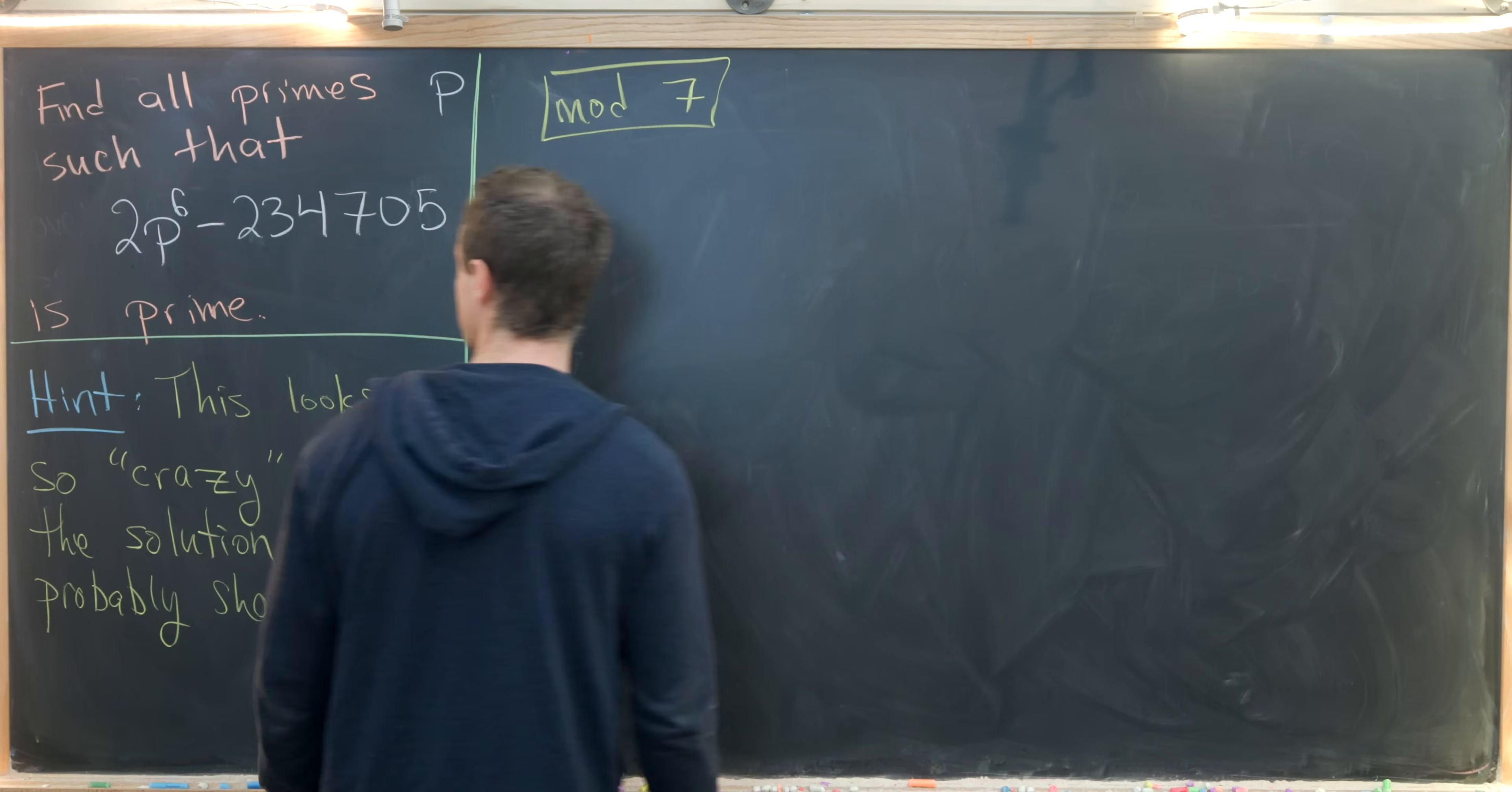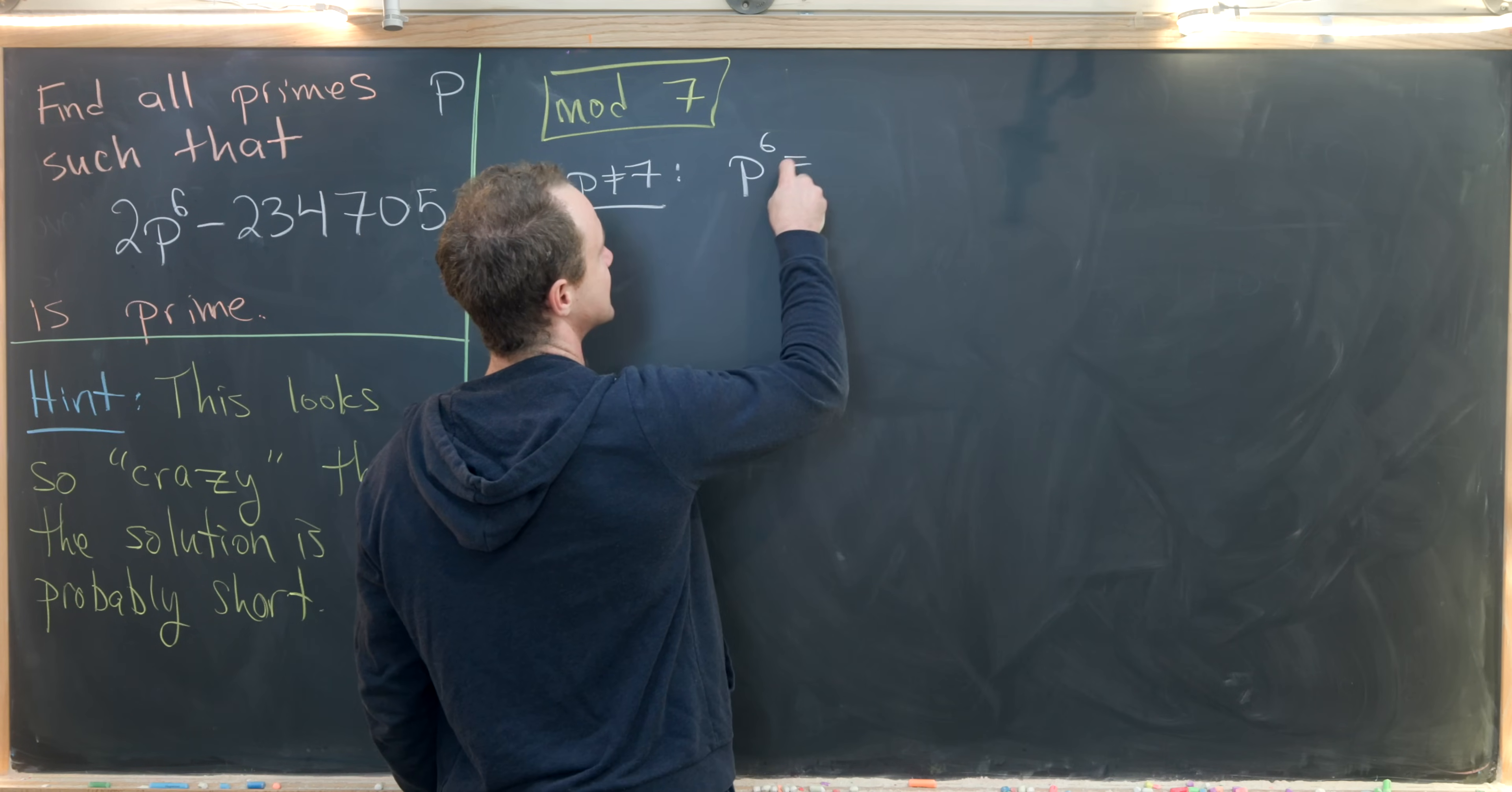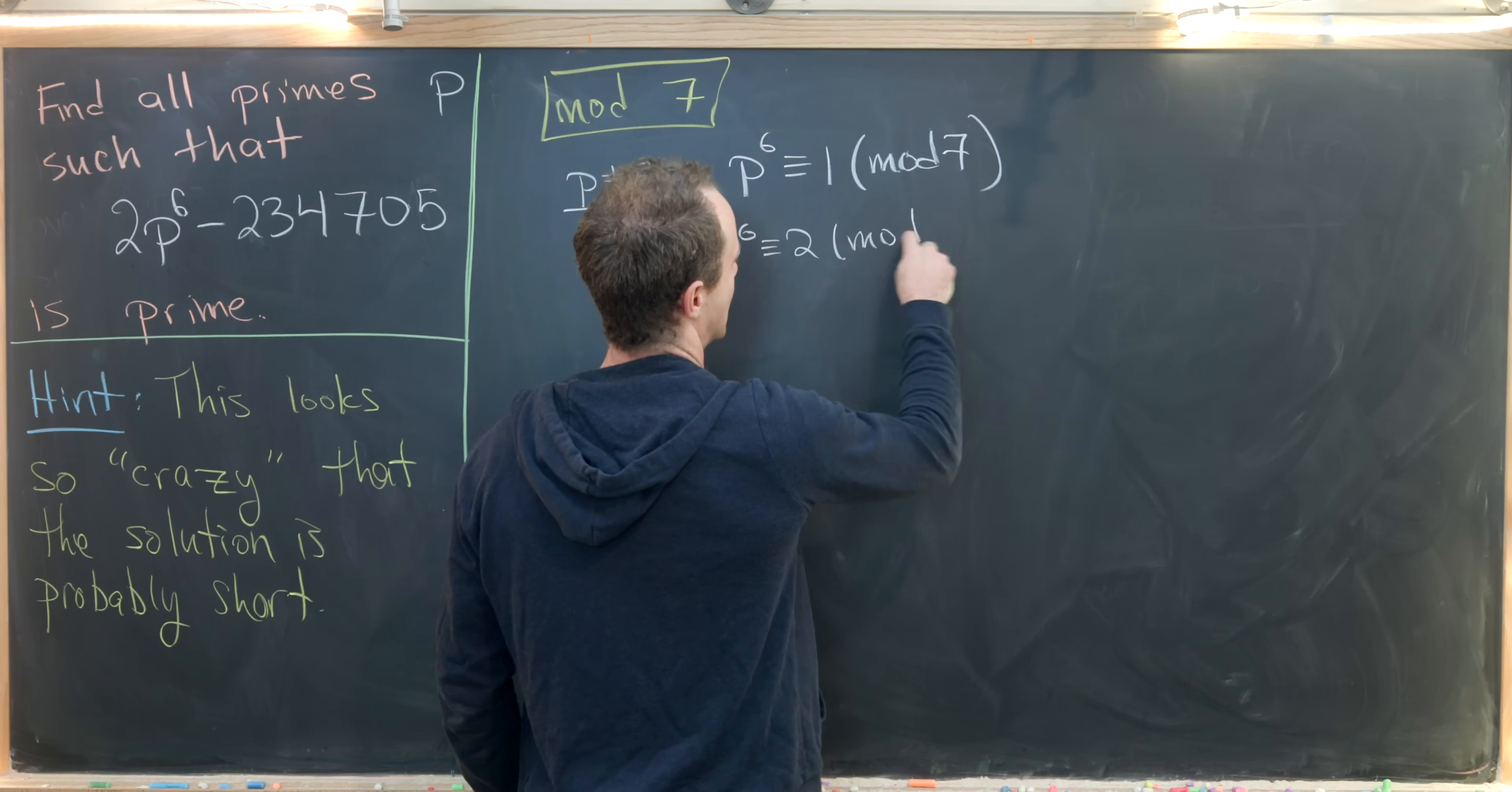So let's do that. Let's notice that if p is not equal to 7, then p to the 6 is congruent to 1 modulo 7. But that means that 2 times p to the 6 is congruent to 2 mod 7.